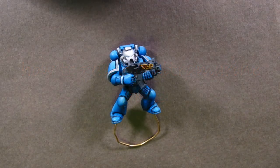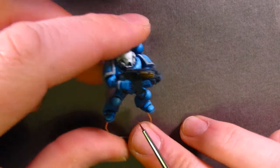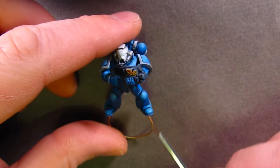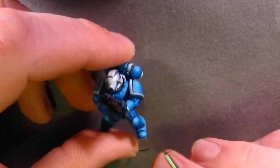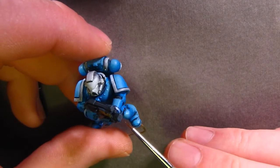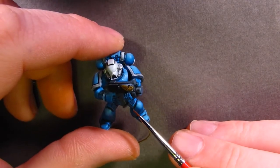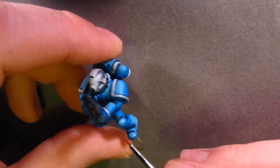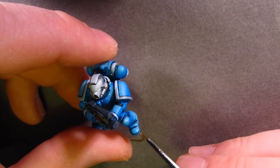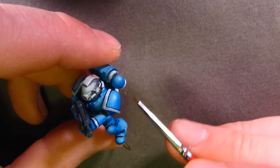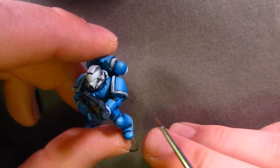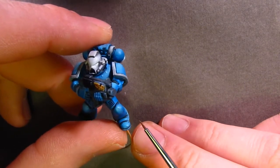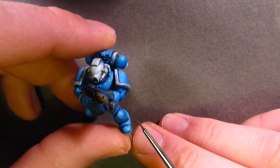So what we're going to do now is highlight the top edges of the knees, the feet, and any high points of the ultramarine. For that purpose I'm going to use Space Wolf Grey.